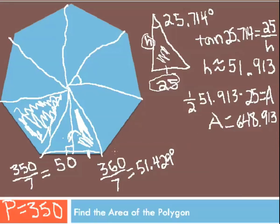To find the area of one of these triangles that we split the original shape into, it's really two times the 648.913.